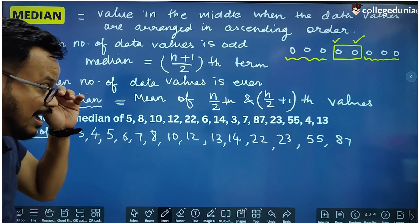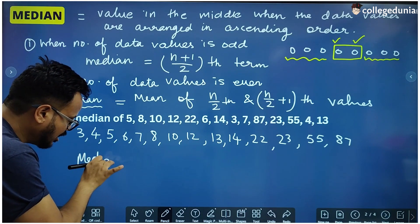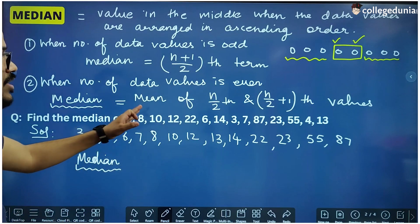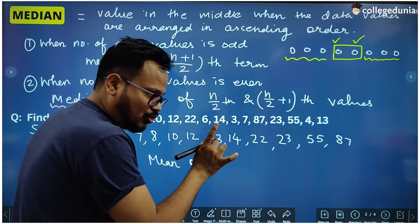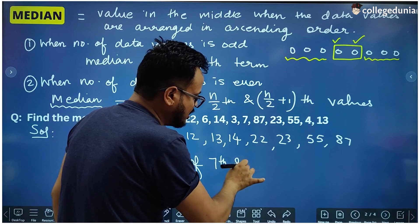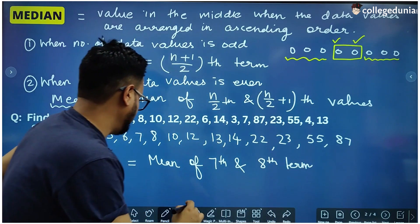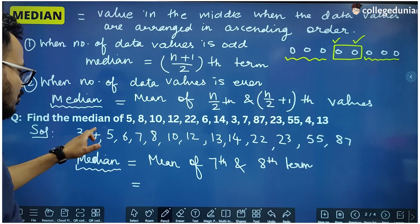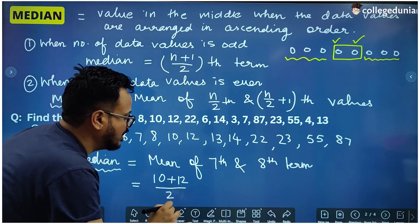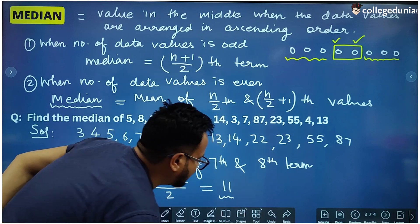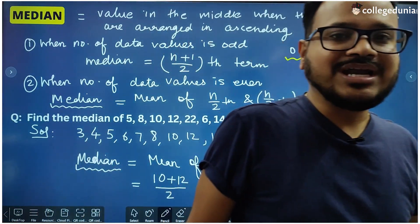All values are included and the number of values is 14, which is an even number. So median is the mean of the (n/2)th and (n/2 + 1)th terms. n = 14, so 14/2 = 7 — we need the 7th and 8th terms. The 7th term is 10 and the 8th term is 12. So median = (10 + 12) / 2 = 22 / 2 = 11. The median is 11, and it need not be a value present in the data.